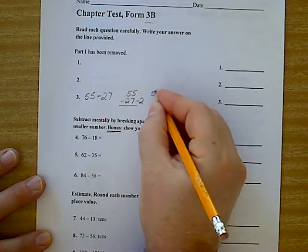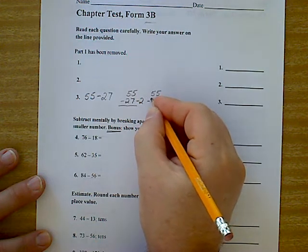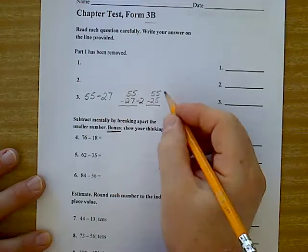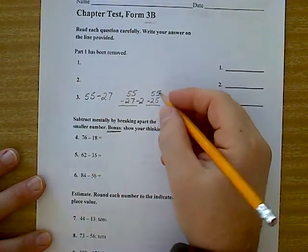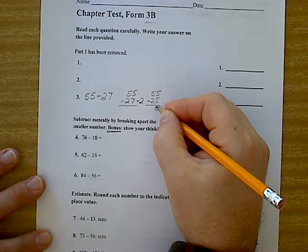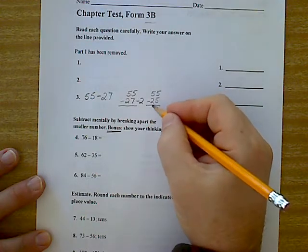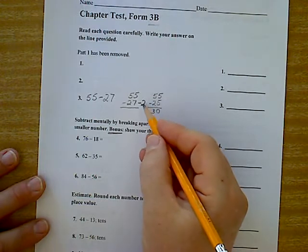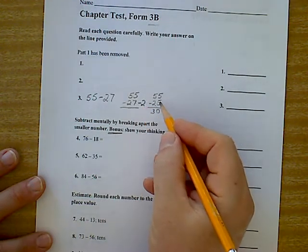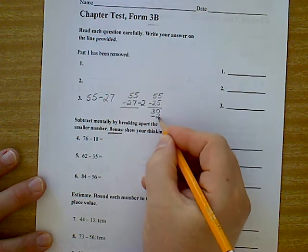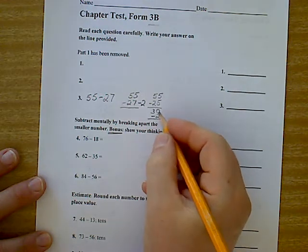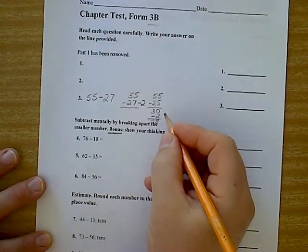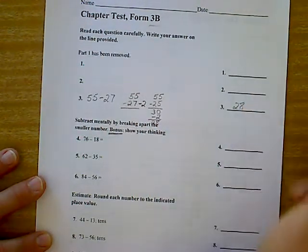Now, my problem is 55 minus 25. Well, that's fairly easy to do in our head because we purposely made it so we knew there would be a 0 here and 5 minus 2 is just 3. But now, because we took away these two, we're not taking away enough. So I have to take those two away as well. And when I do that, I end up with 28. So my answer would be 28.